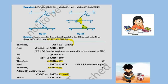Given PQ is parallel to RS, angle MXQ is 135 degrees, and angle MYR is 40 degrees, we have to find angle XMY. We will draw a line AB parallel to PQ through point M, as shown in the second figure.